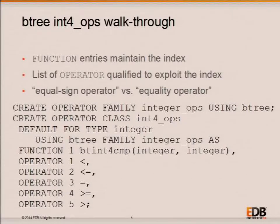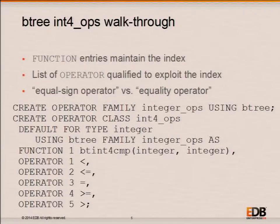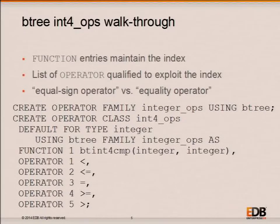This is the SQL used to create an operator family and then create an operator class — a mimic of the default Btree operator class for the integer data type. After preliminary material specifying the name, data type, and access method, the bulk of the content is a list of functions and operators with associated ordinal numbers. For Btree there is one mandatory function entry and five mandatory operator entries. The function entry is the comparison function: it takes two values of the data type and tells you whether the first is less than, equal to, or greater than the second.